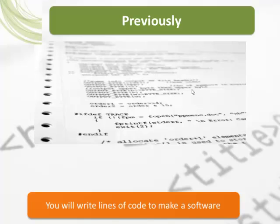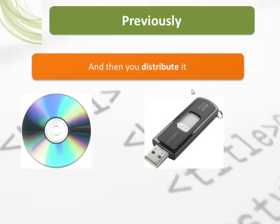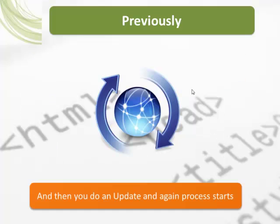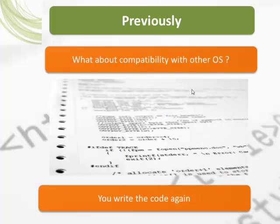To understand what used to happen previously: to make software, you would write many lines of code and then distribute it via CD, DVD, or USB drive. When you made an update or a new version — like Microsoft Office going from 2007 to a newer version — users had to go to the shop and buy it again.